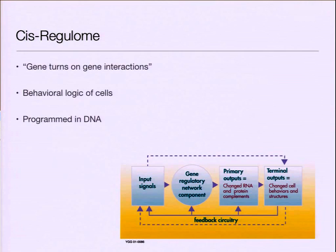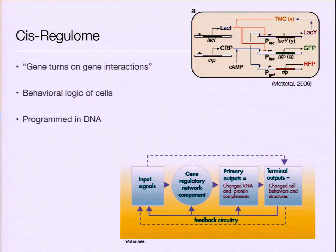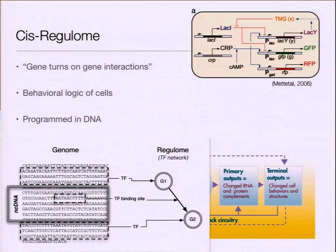For decades now, we've been trying to mine these interactions out of the cell. The beautiful thing about the cis-regulome is that it's actually written in DNA. You can identify short sequences in non-coding regions called binding sites. Mark's tools would help us identify what type of regulatory interactions these binding sites encode. These binding sites exist in large regions of DNA called non-coding DNA.